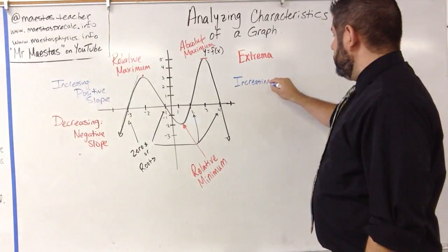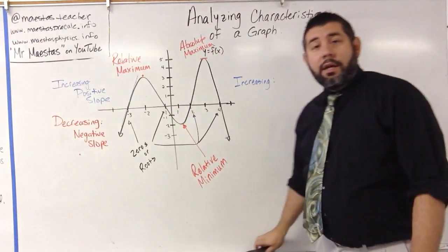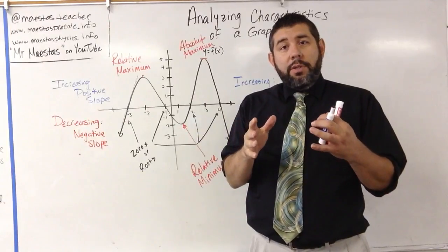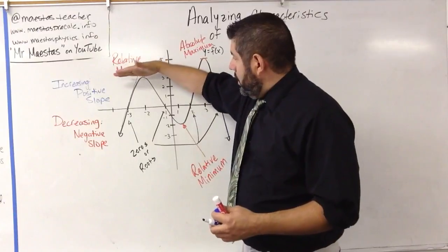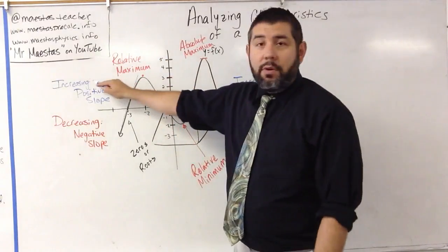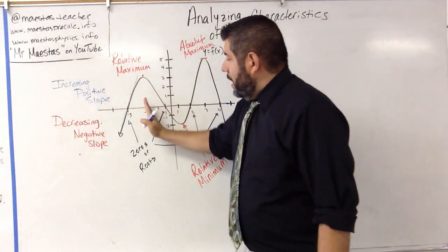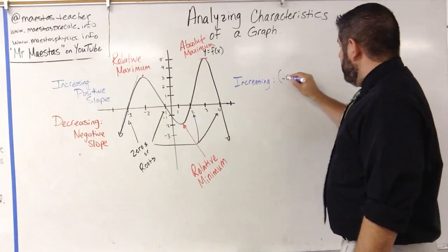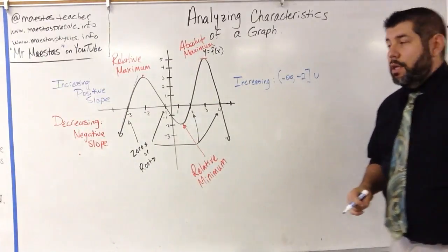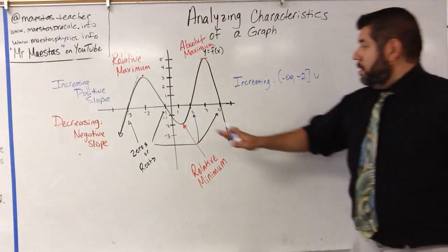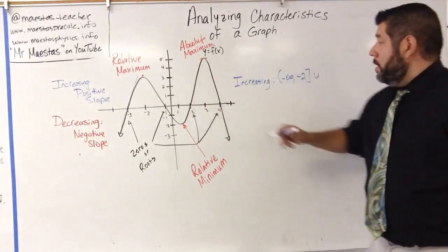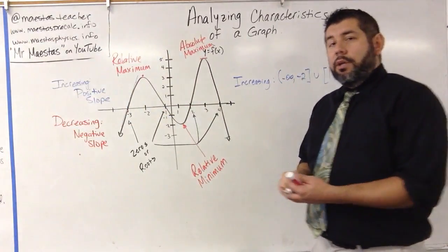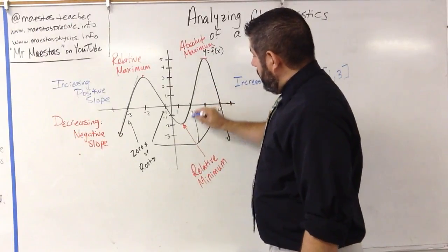So, increasing — and I'm going to write this in interval notation. The intervals are going to be in terms of x. At x equals negative 2, our slope is 0, so it's not a positive slope. Everything less than negative 2 is a positive slope, so this function is increasing from negative infinity to negative 2. It's also increasing from 1 to 3. Those are the only places where the slope is positive — you're looking at a tangent line to the curve and that slope being positive.